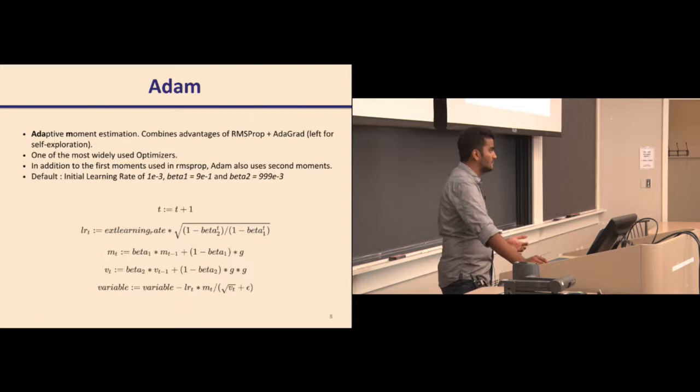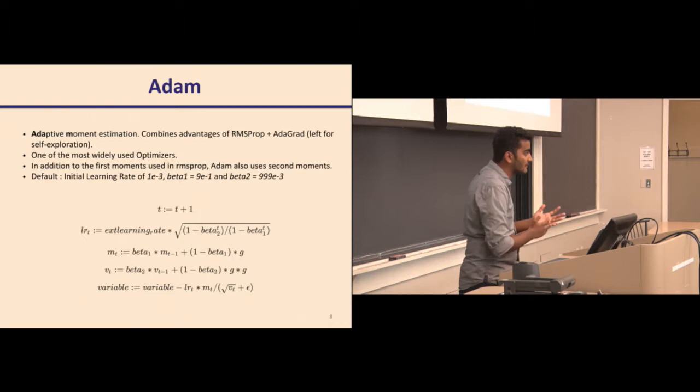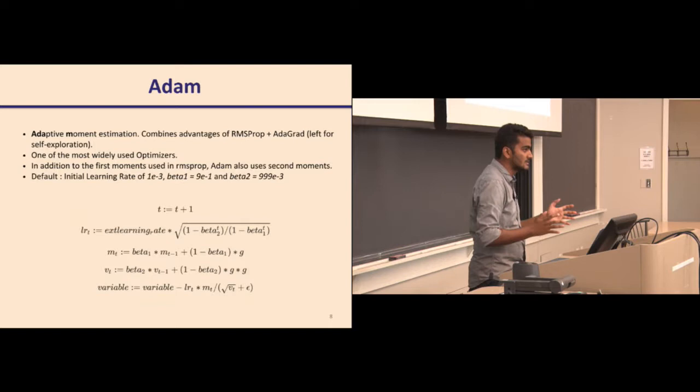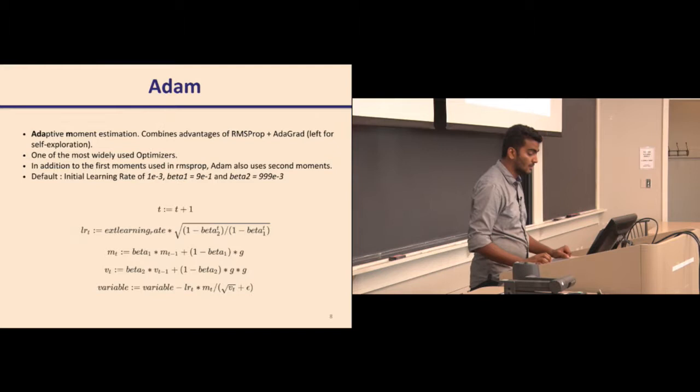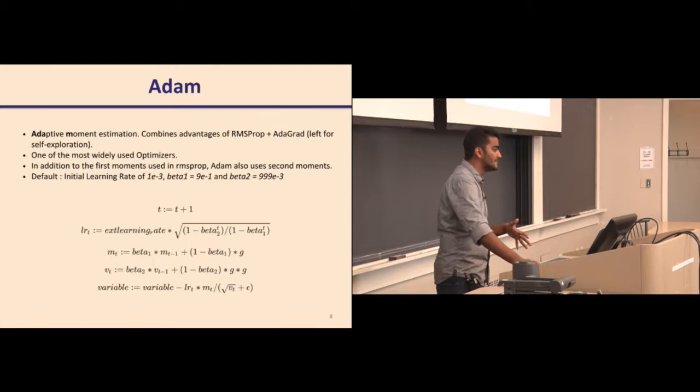One of the most common and widely used optimizers is the Adam optimizer, which stands for Adaptive Moment Estimation. It captures the positive qualities of both RMSProp and AdaGrad. With bigger networks, backpropagating to the first layer gives very small updates, making those updates unstable in early training. Adam addresses this by taking into account both the first moment and the second moment of the gradients to update the learning rate.